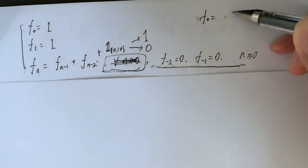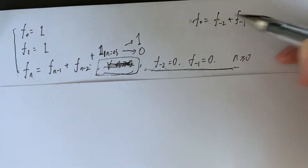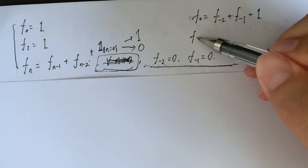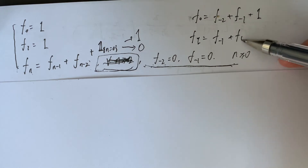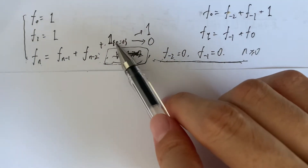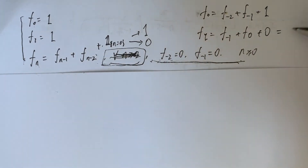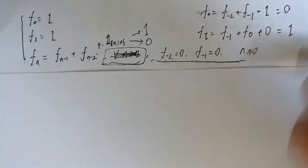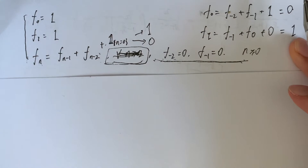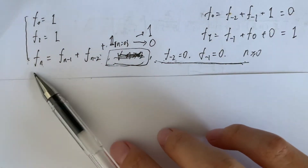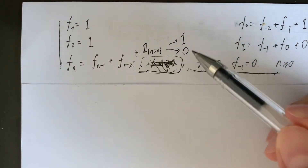For verification: F(0) equals F(-2) plus F(-1) plus 1, which works. And F(1) equals F(-1) plus F(0) plus 0, which also gives 1. By comparison, we can confirm the recurrence generalizes to n ≥ 0, so we can remove the original boundary restriction.